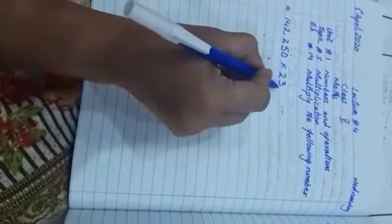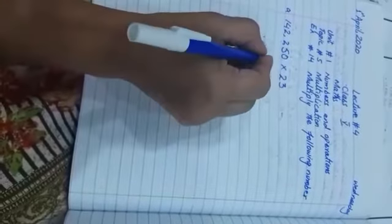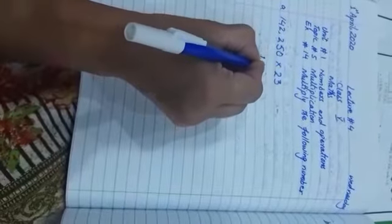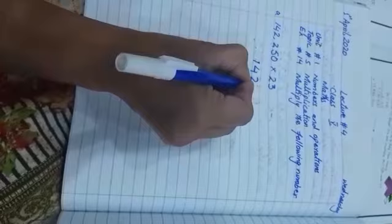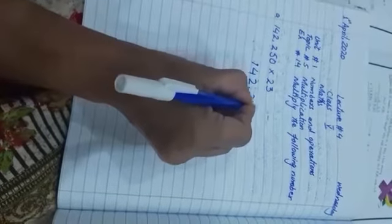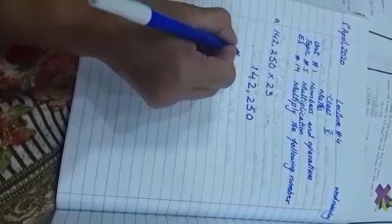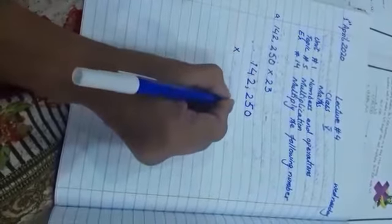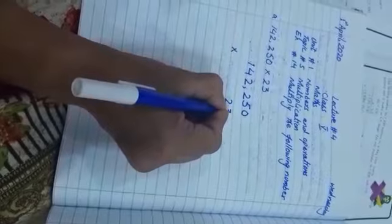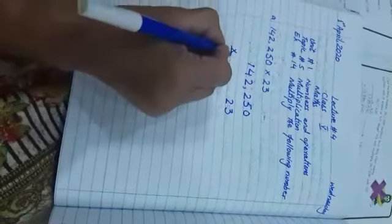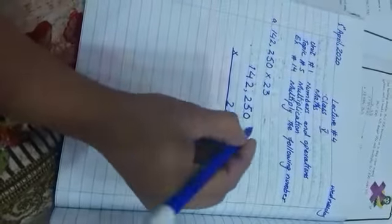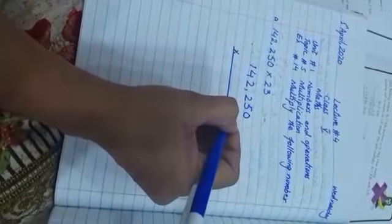Now write these numbers vertically: 142,250, then on the next row, multiplied by 23. Be careful with your columns. You have to take units under units and tens under tens. Now we will multiply.